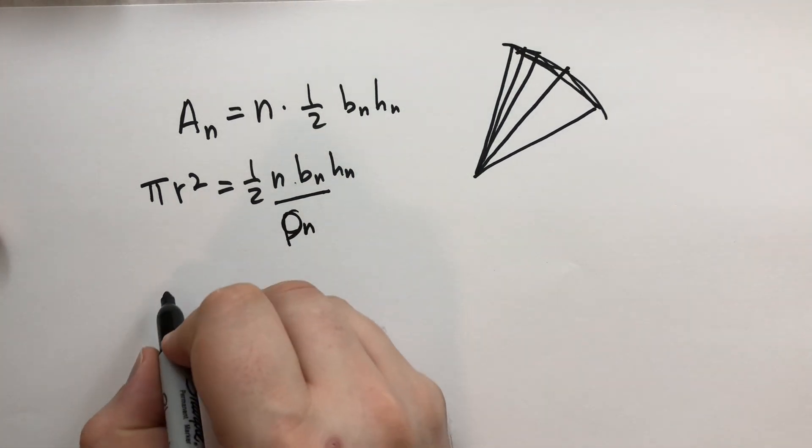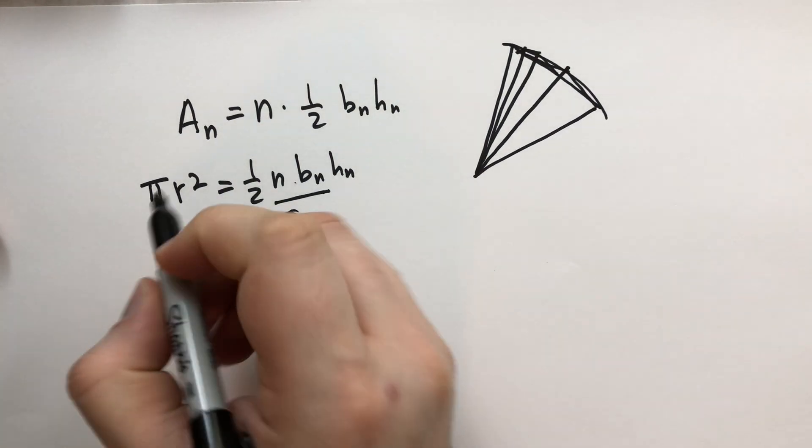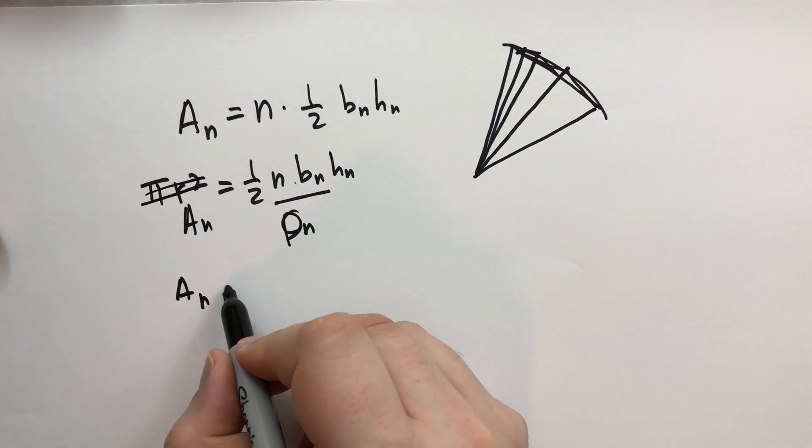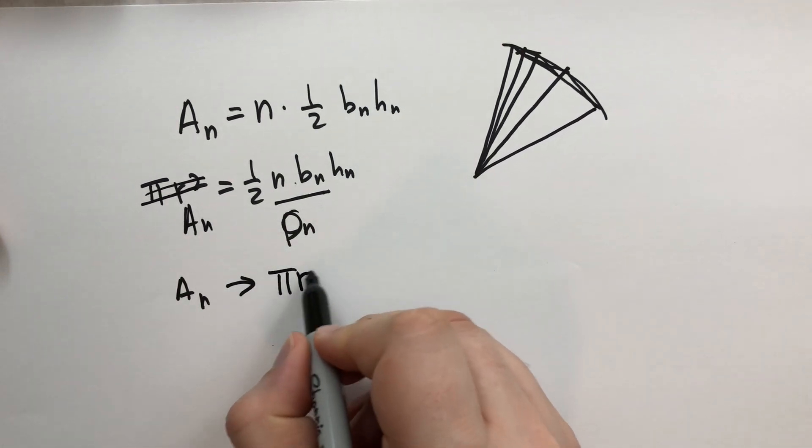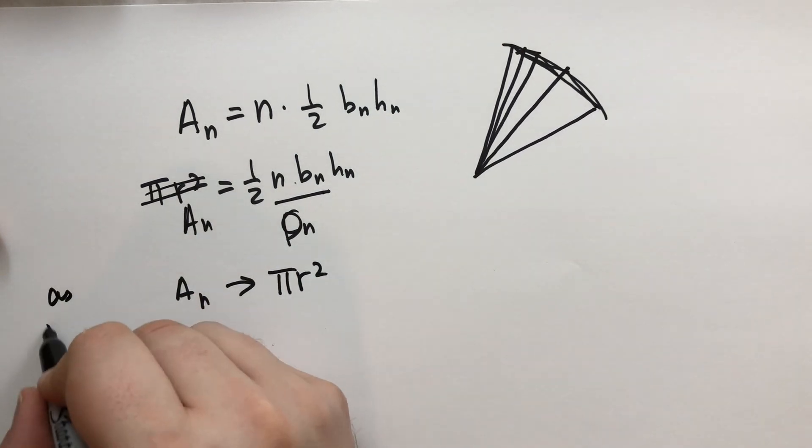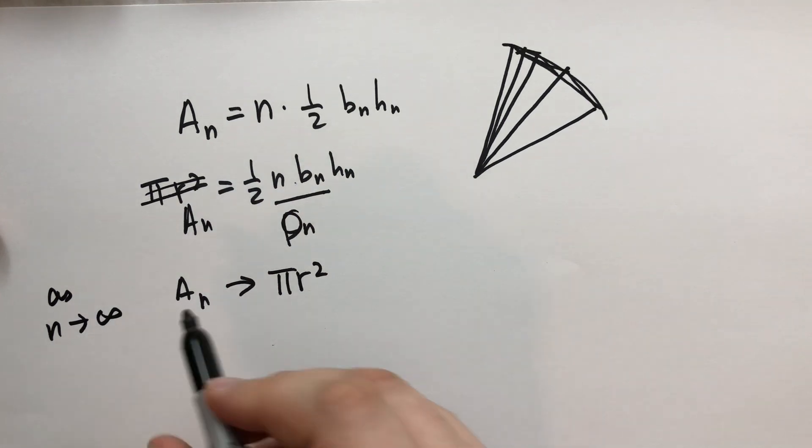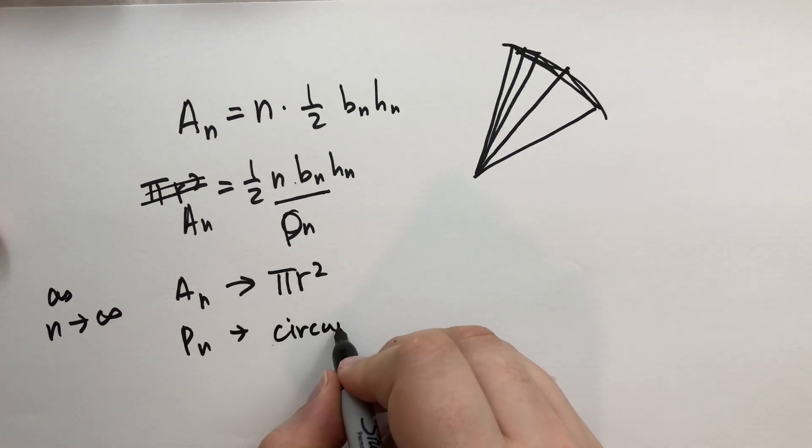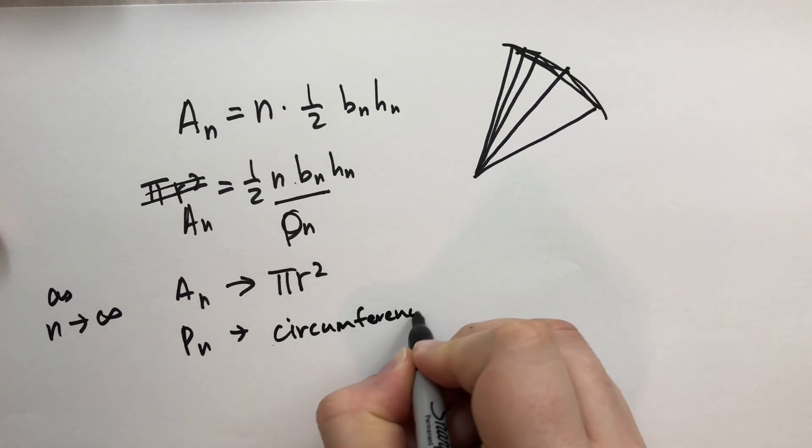So as n gets large, A_n approaches πr². As n gets large towards infinity, p_n approaches the perimeter, the circumference.